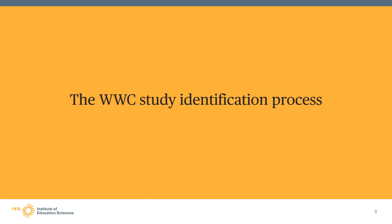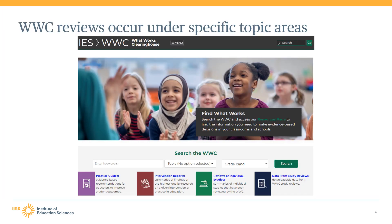Let us begin by discussing the WWC's study identification and review process. The WWC conducts systematic reviews of research under a variety of topic areas. For example, the WWC reviews research in the areas of literacy, mathematics, and science, as well as research on specific student populations, such as pre-K students in early childhood, K-12 students, post-secondary students, English learners, and students with disabilities.